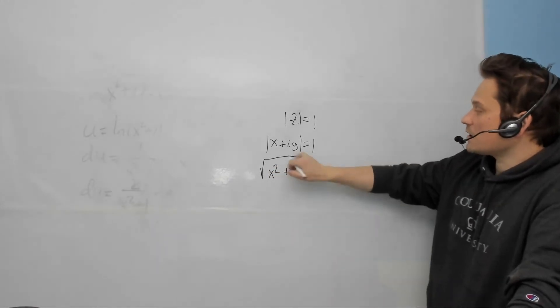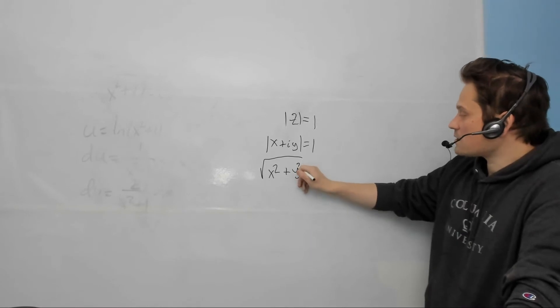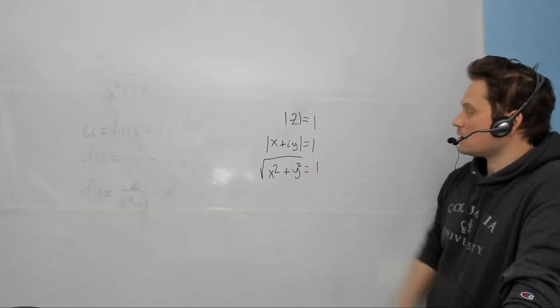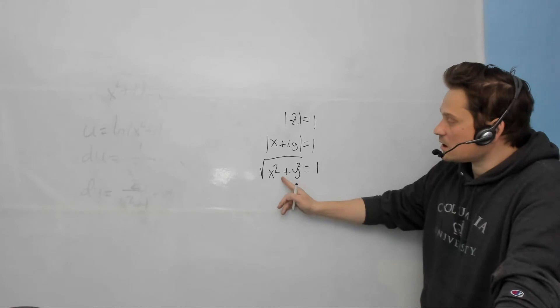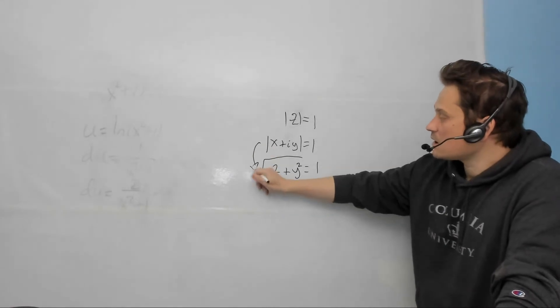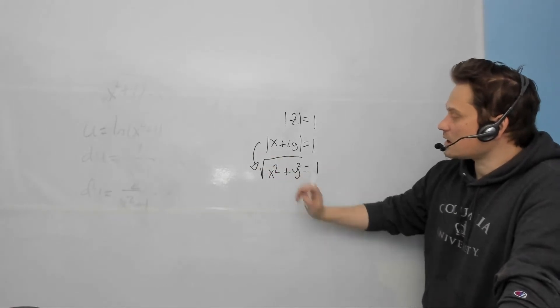After that, you put the y, which is the imaginary part. You square that and you still set that equal to 1. Notice that when you transition to here, so from here to here, do not include the i together with the y.